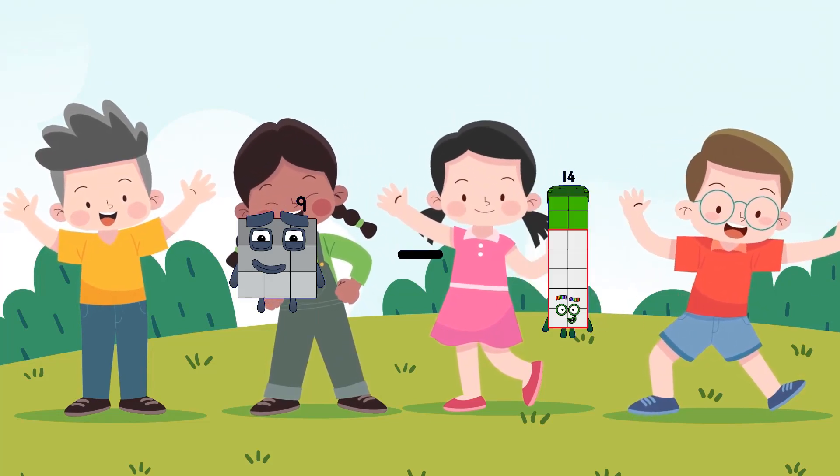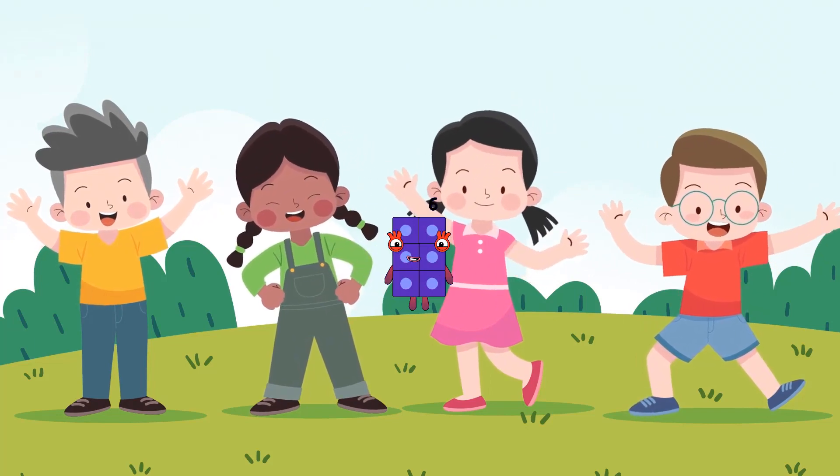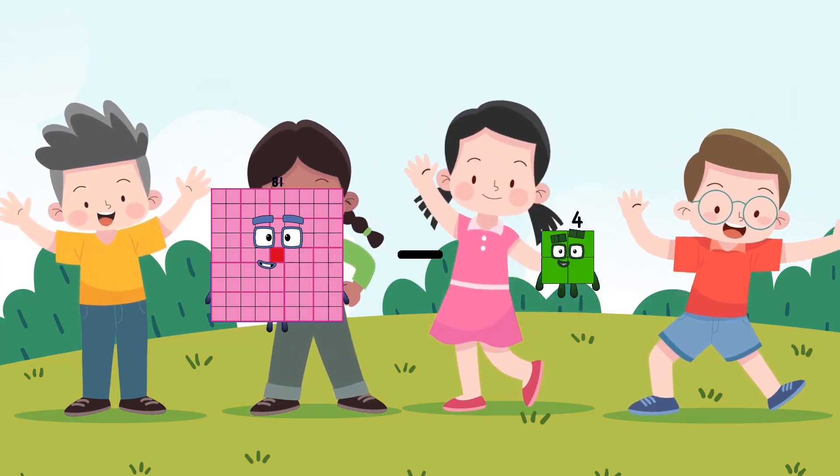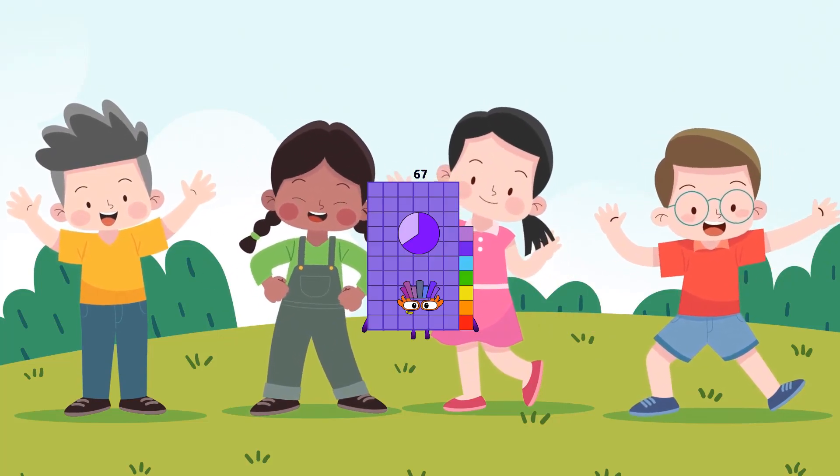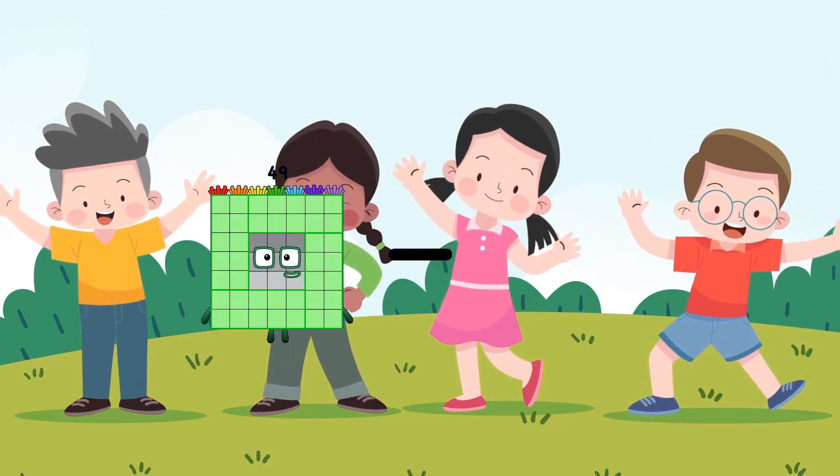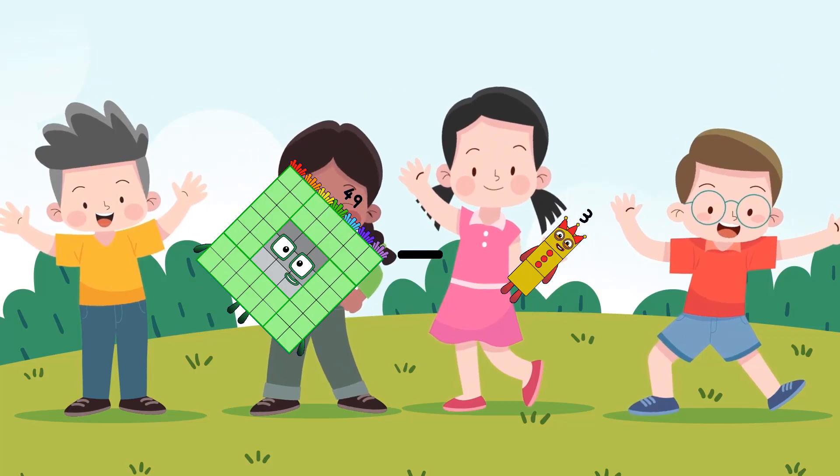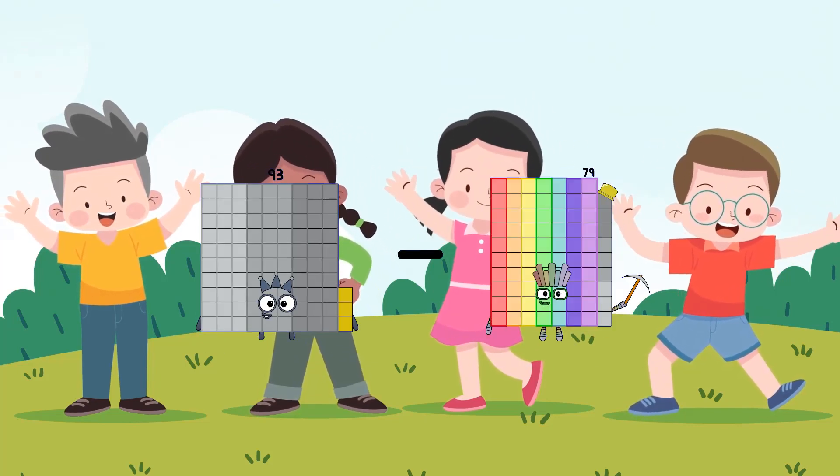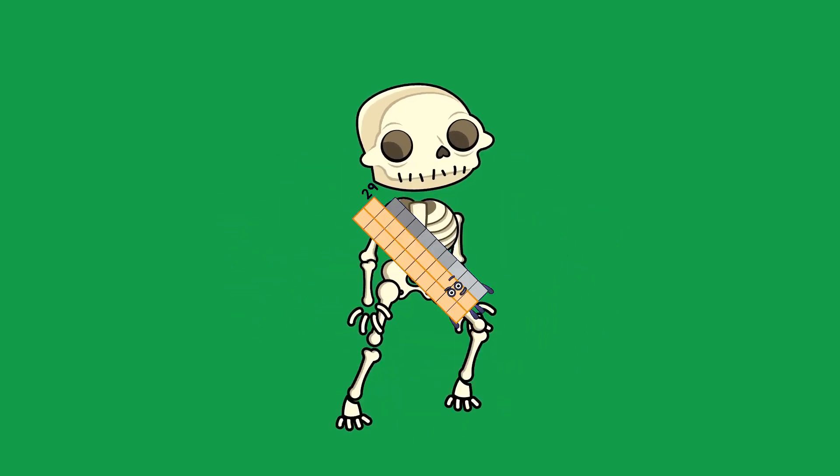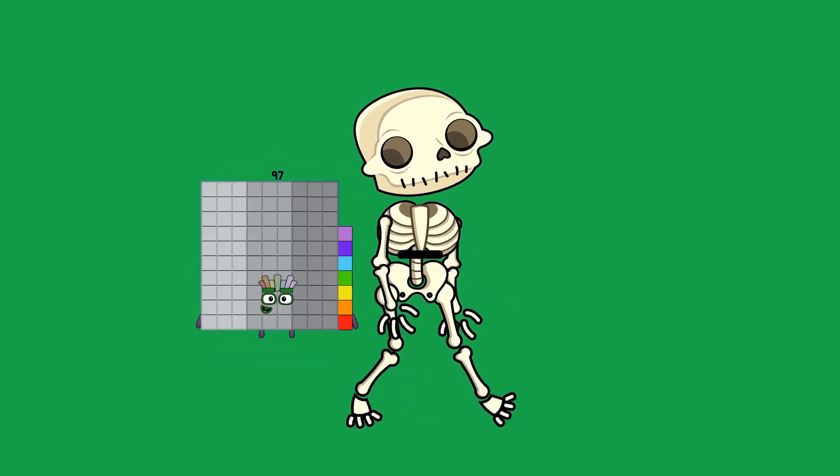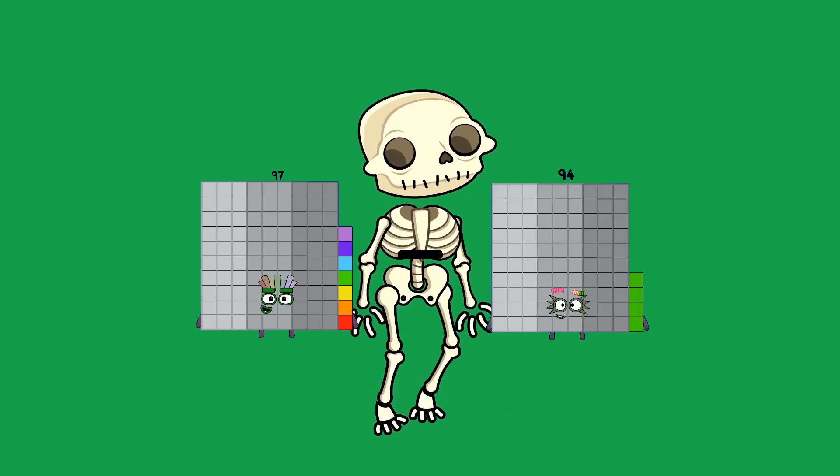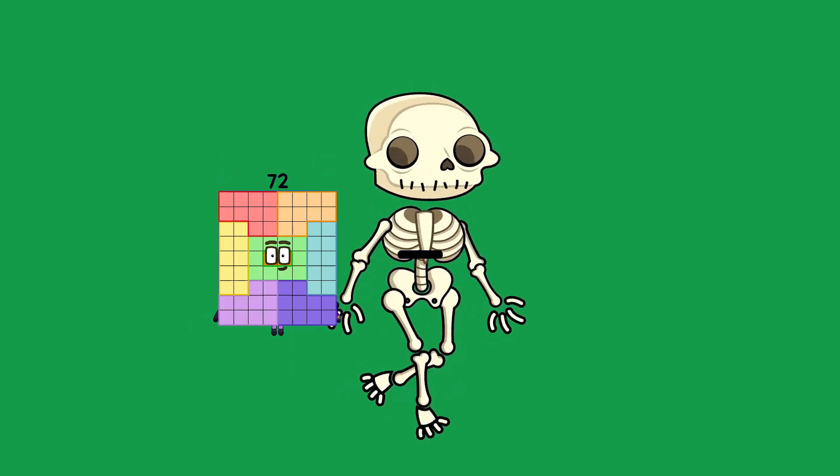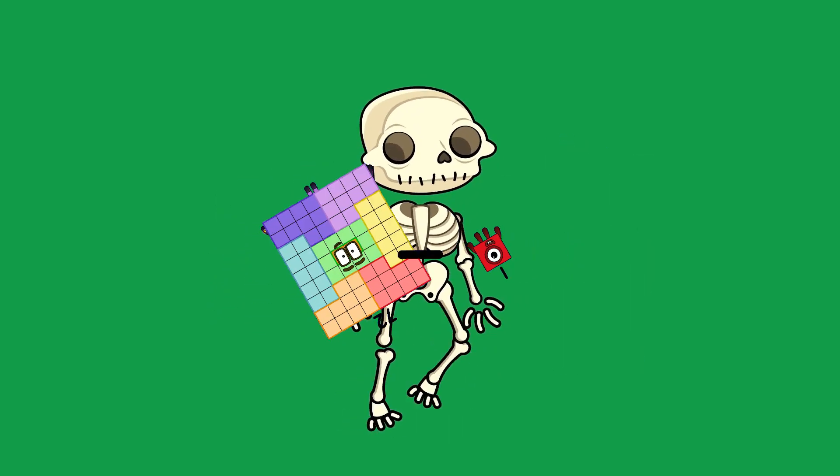79 minus 3 equals 6. 81 minus 14 equals 67. 49 minus 3 equals 46. 93 minus 64 equals 29. 97 minus 20 equals 77. 72 minus 1 equals 71.